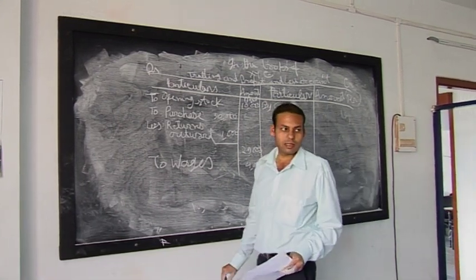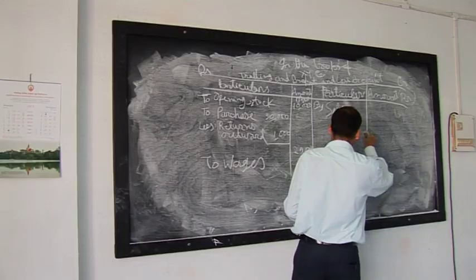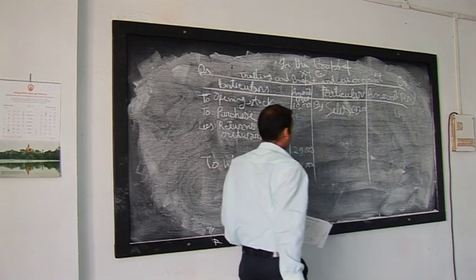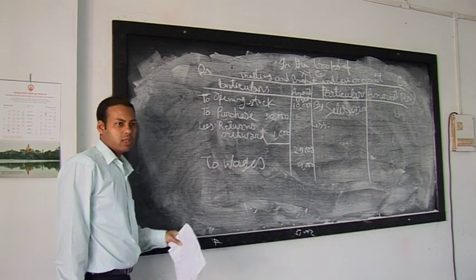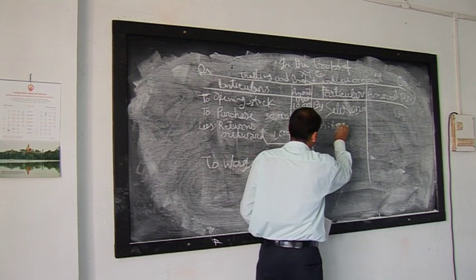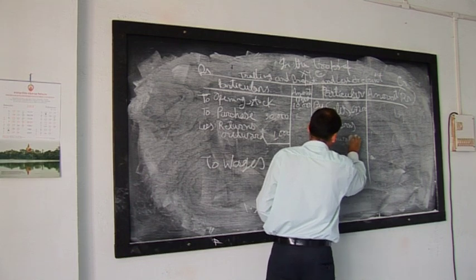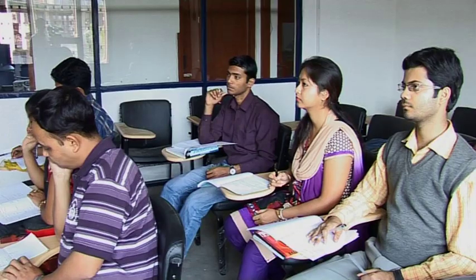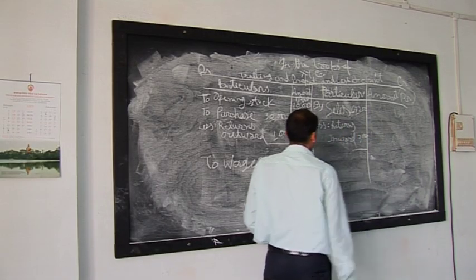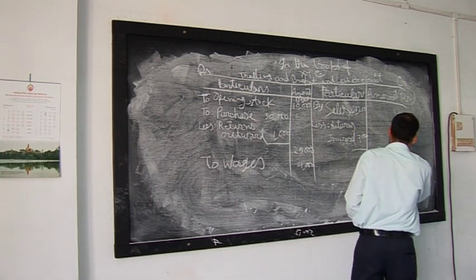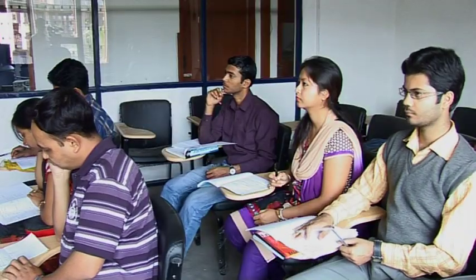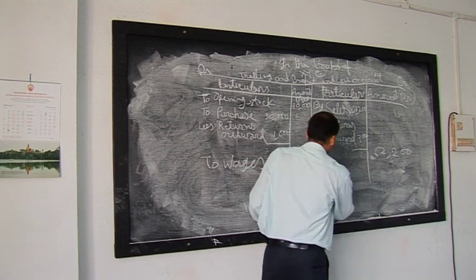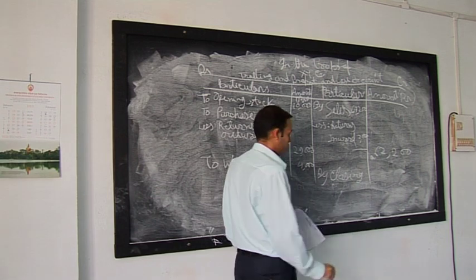On the credit side of the trading account we have sales. Sales amount is 64,200, but there is an adjustment for returns inward — customers have returned goods because of some defects. We deduct returns inward, also called sales return, of rupees 2,000. So net sales are 64,200 less 2,000 equals 62,200. The next item on the credit side is closing stock: given as an adjustment, closing stock is 12,000.